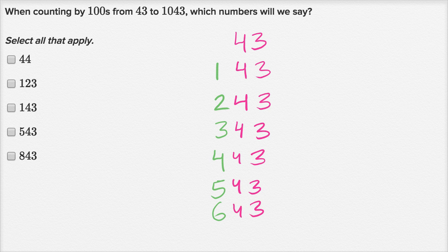Then add another 100, you're going to have six hundred and 43. Add another 100, you're going to have seven hundred and 43. Let's keep adding 100. Add another 100, you're going to have eight hundred and 43.